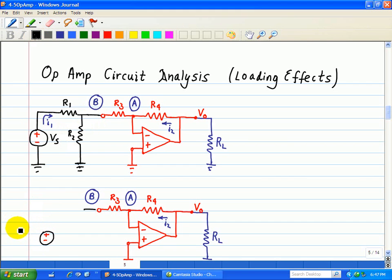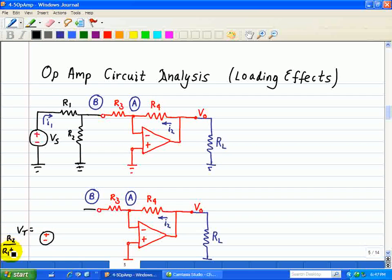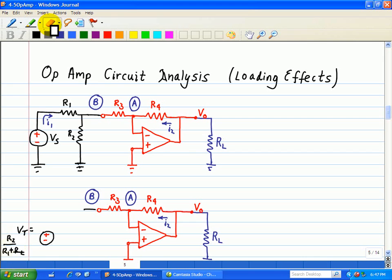So Vt is equal to R2 over R1, just using the voltage divider, plus R2 in the denominator. Here, clean that up a bit, times Vs.